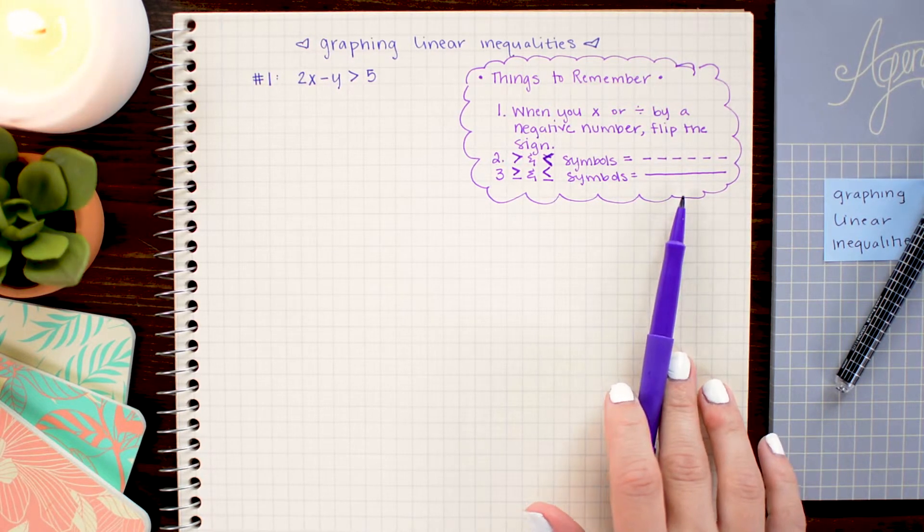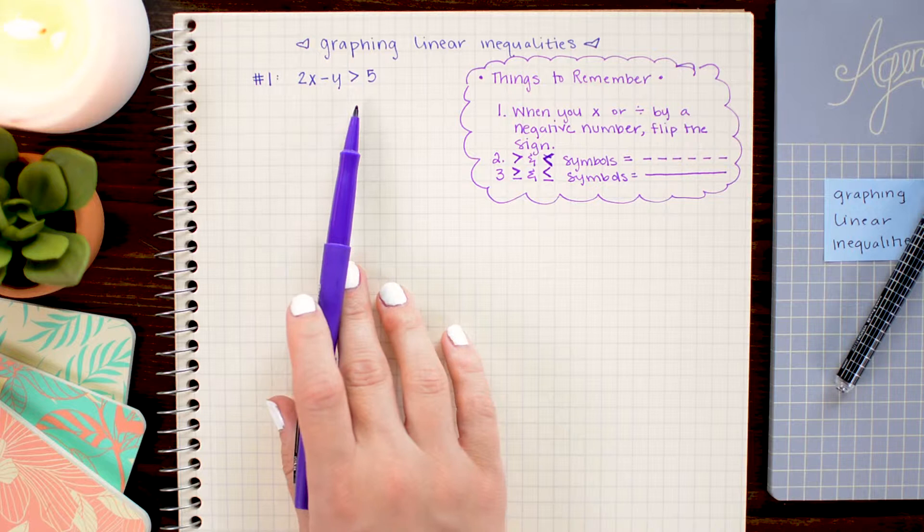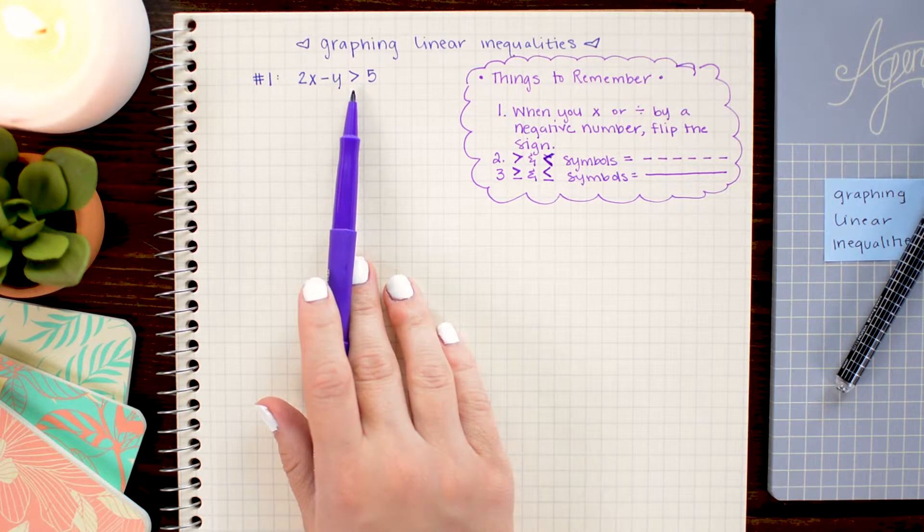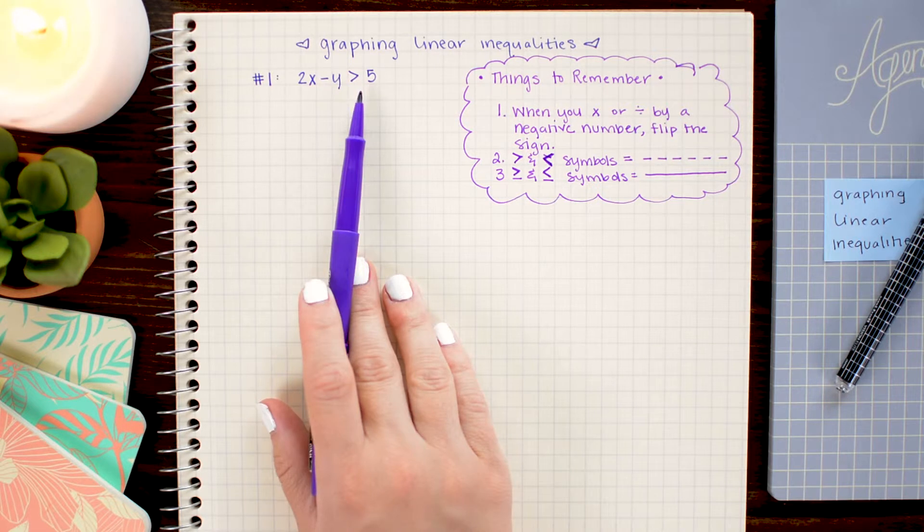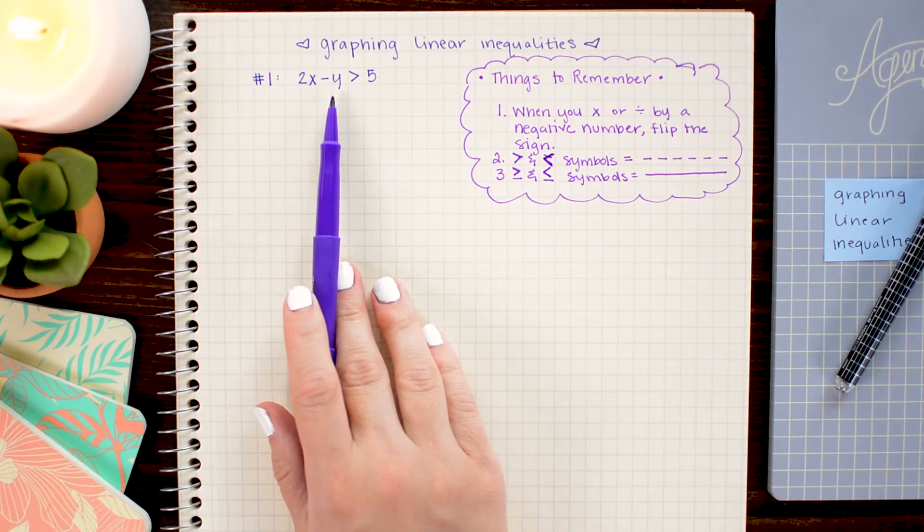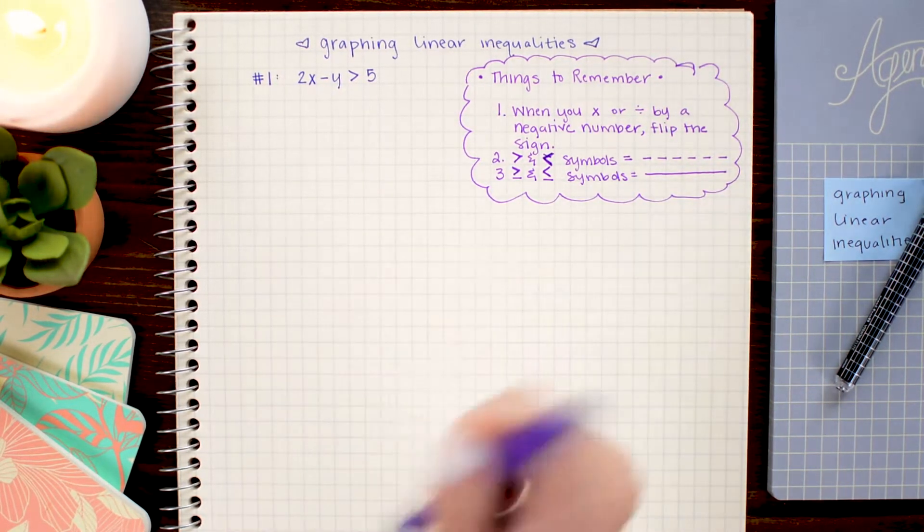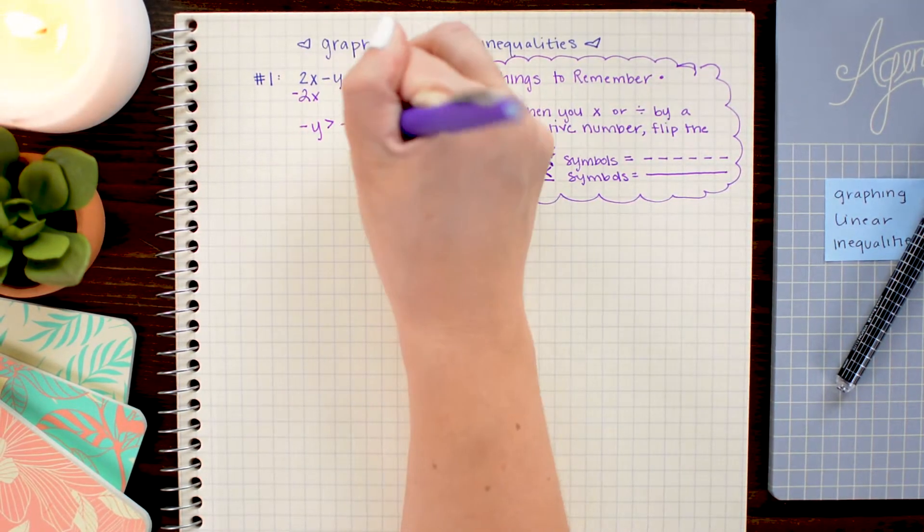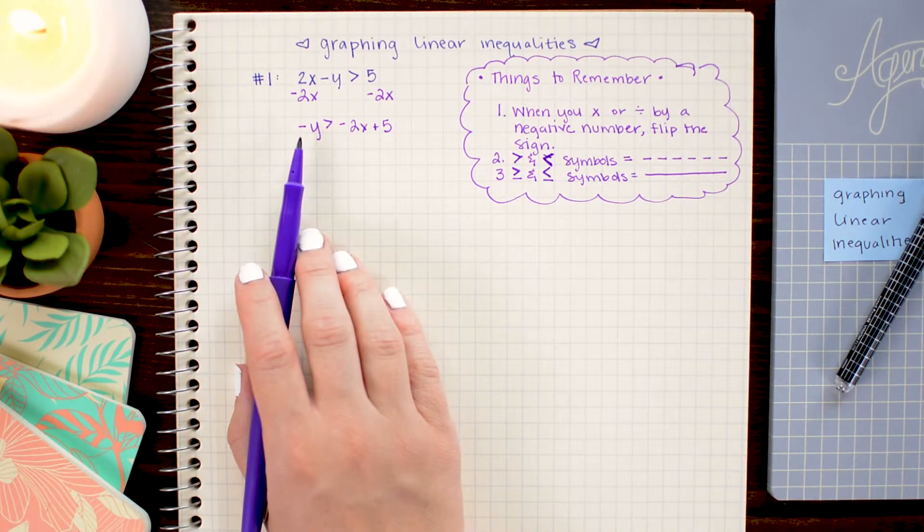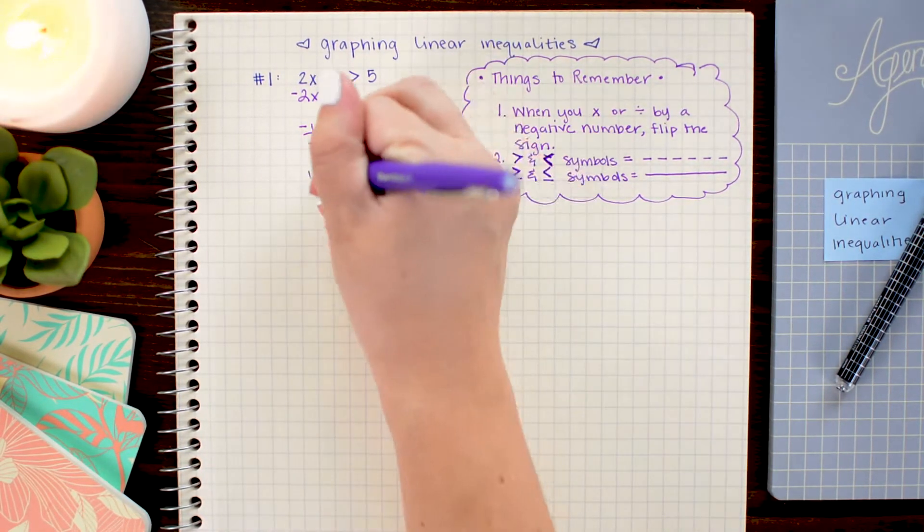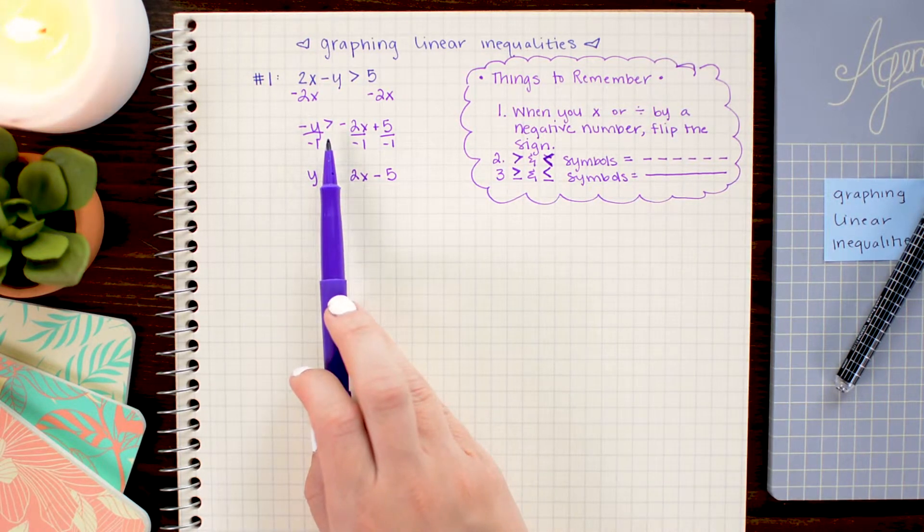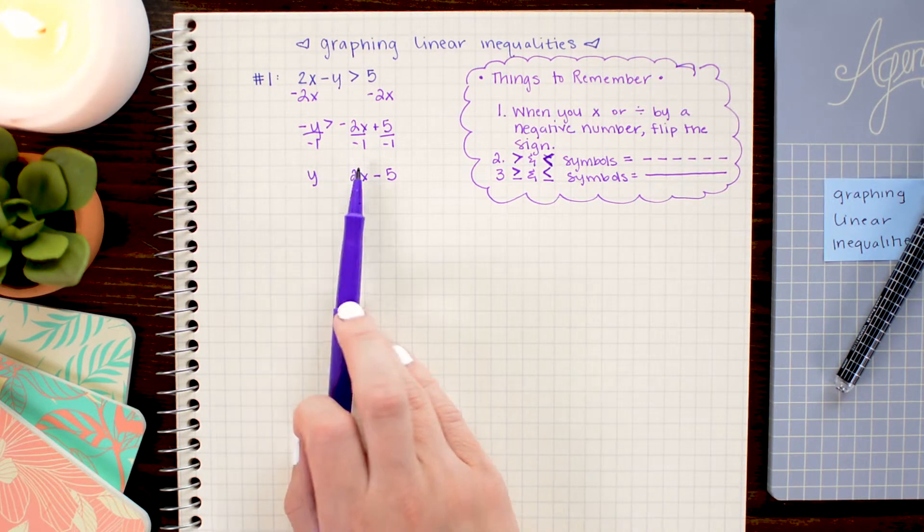So let's take this first example here. I have 2x minus y is greater than 5. Now, we want to graph this linear inequality. So even though I have this inequality symbol here, I'm going to treat this a lot like we would treat a normal linear equation. And I'm going to solve for y to get it into y equals mx plus b form. So the first thing I want to do is subtract 2x over. And then I need to get rid of the negative symbol on this y. And to do that, I'm going to divide each term by negative 1. And here is where our first rule comes into play. We need to flip this greater than symbol into a less than symbol because we divided by a negative number.